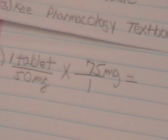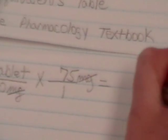With Dimensional Analysis, you cancel out like terms, and the term that is not canceled out is what your answer ends in. So our milligrams cancel out, and so the only thing we have left is tablets. So we know our answer will be in tablets.